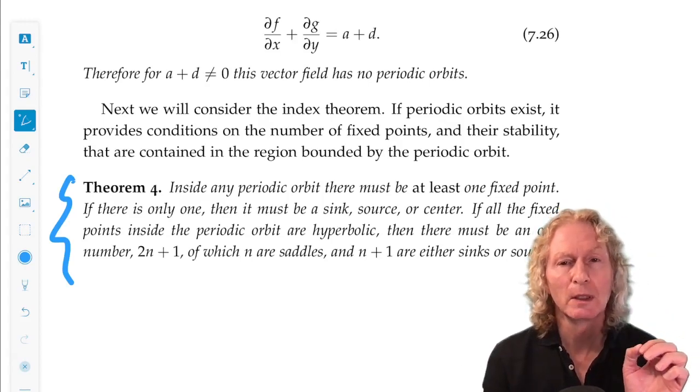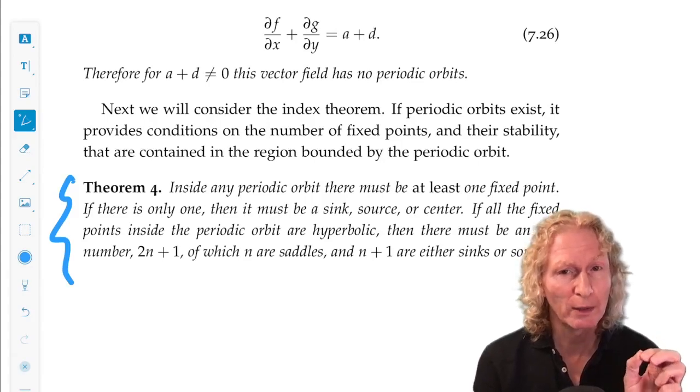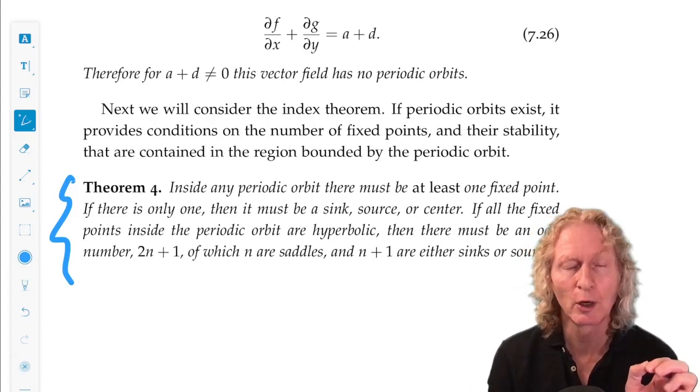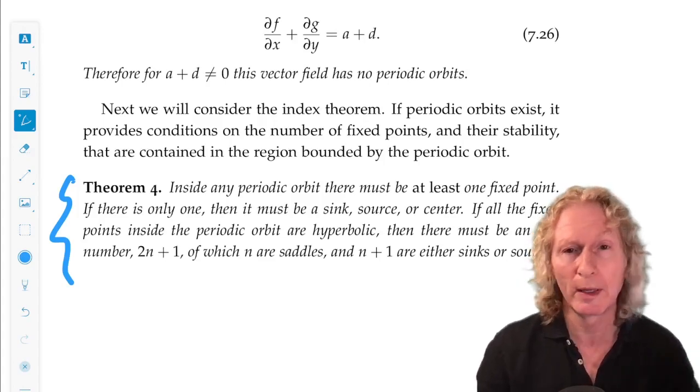Now a center is a fixed point where the eigenvalues associated with the linearization are purely imaginary, plus or minus i omega, omega non-zero.